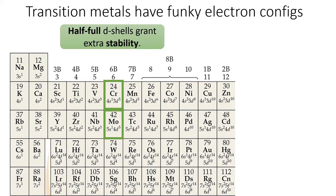First, having a d shell which is half full often grants extra stability. So the elements chromium and molybdenum both steal an electron from their s subshell so that they have five electrons in their d subshell.